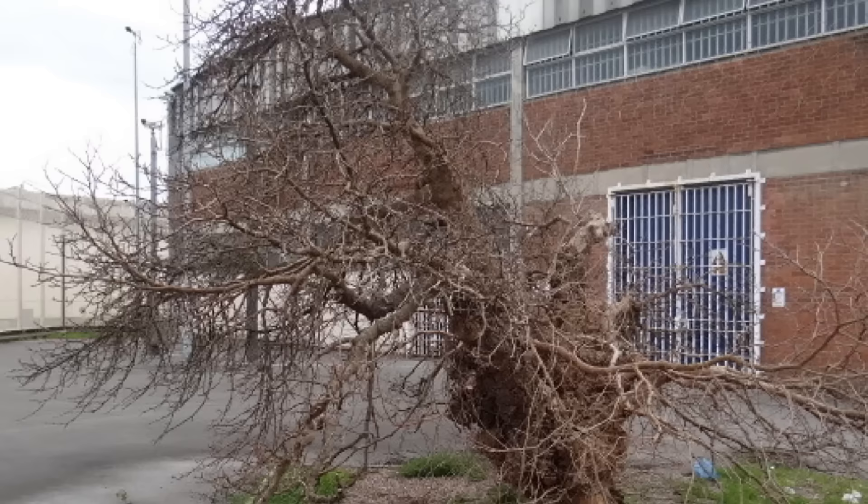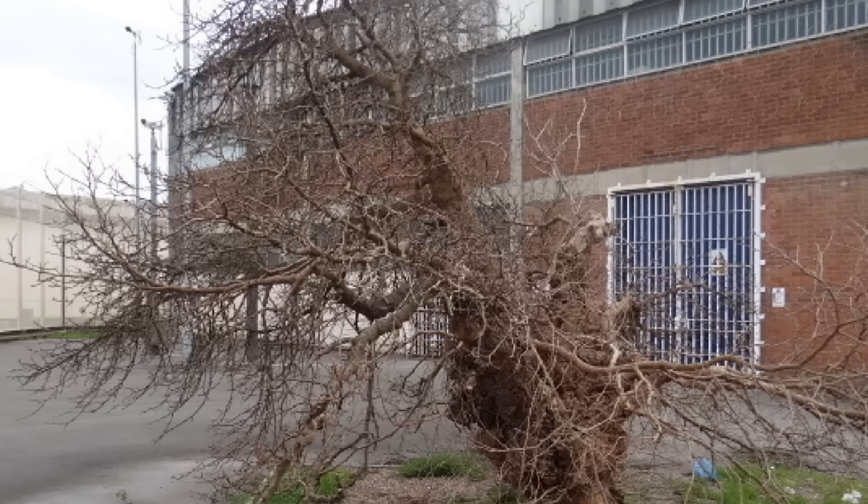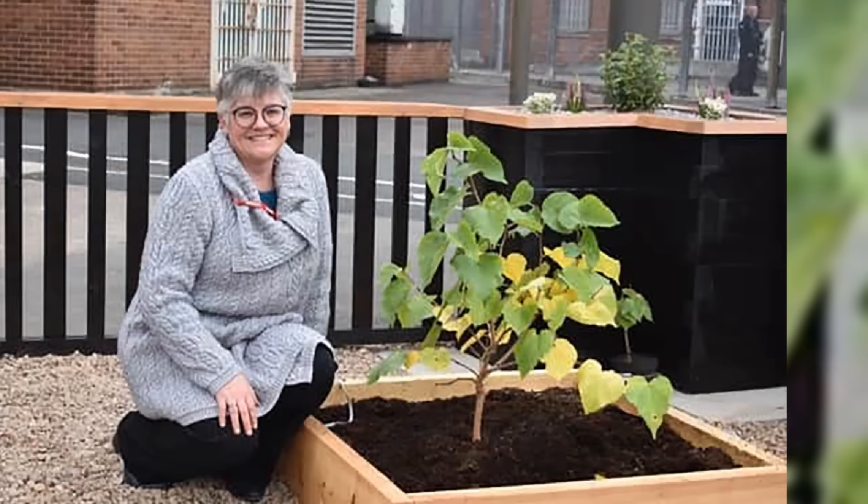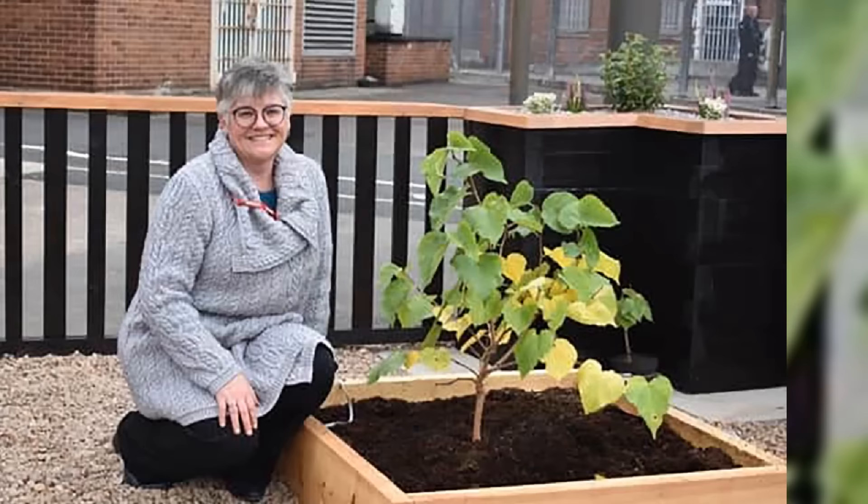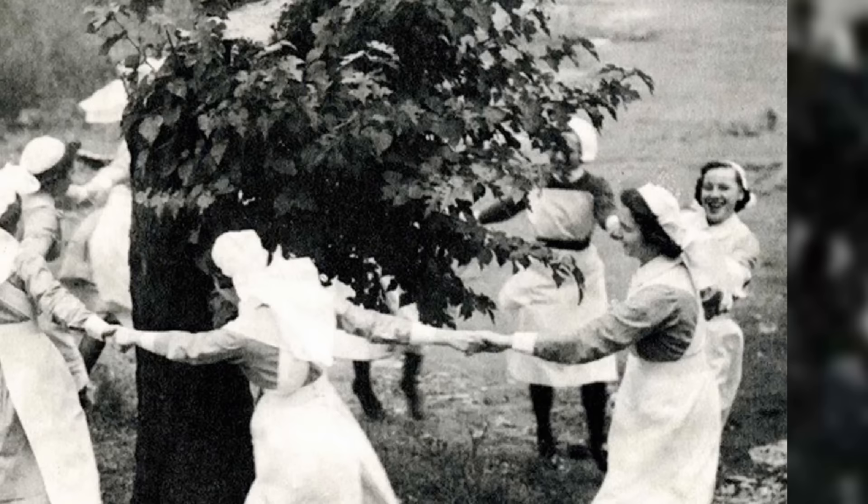Sadly, the original mulberry tree succumbed to a beetle infestation just a year later and had to be cut down. However, the enduring power of nursery rhymes prevailed. It was discovered that a prison officer had taken cuttings from the tree in the 1980s, and these cuttings had since matured into healthy trees. One of these cuttings was replanted in the original spot within the prison grounds, while another now graces the Yorkshire Sculpture Park, ensuring that the legacy of the tree lives on.